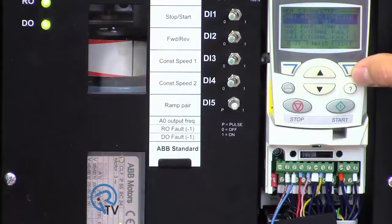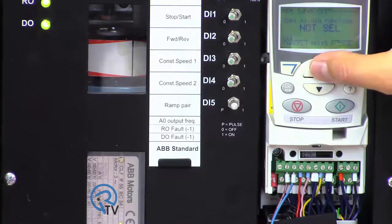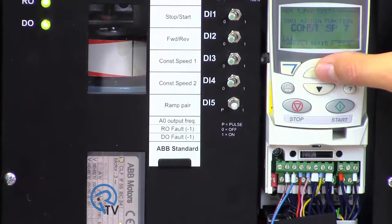We can set some protection in the drive in case we lose our sensor signal. Parameter 3001 can be set to default, constant speed 7 which is user-defined, or the last speed used.